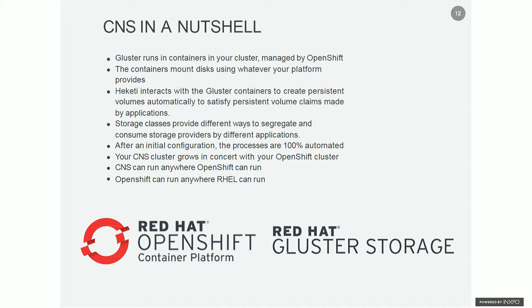Container native storage can run anywhere OpenShift can run, which means anywhere RHEL can run. It uses Gluster at the end of the day, which is a Red Hat product — tested, vetted, and production-ready. Gluster has been running production workloads for upwards of a decade. We support Red Hat OpenShift up to 2,000 nodes running up to 250 containers per node, so you can run a pretty massive OpenShift cluster and have a proven, reliable, fast storage solution built right in.